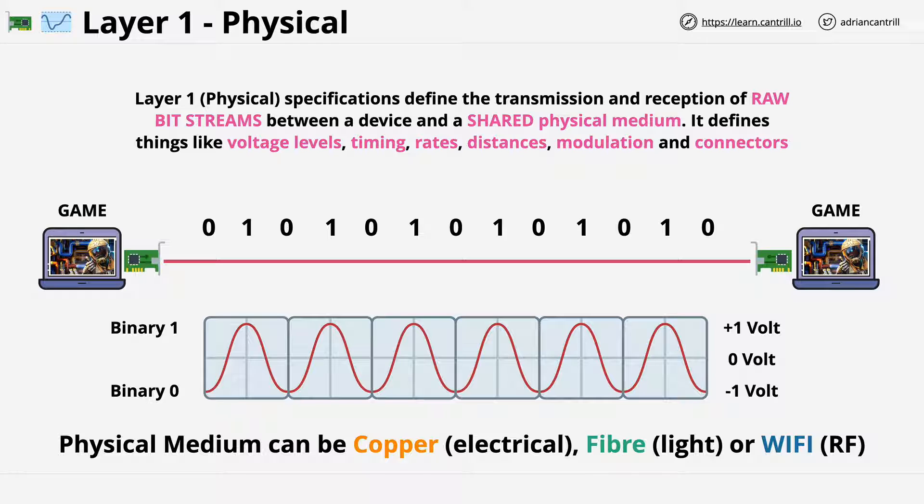If I refer to a device as layer X, so for example layer 1 or layer 3, then it means that the device contains functionality for that layer and below. So a layer 1 device just understands layer 1, and a layer 3 device has layers 1, 2, and 3 capability. Now try to remember that, because it's going to make much of what's coming over the remaining videos of this series much easier to understand.